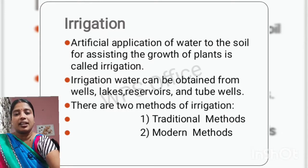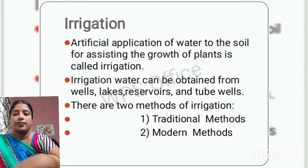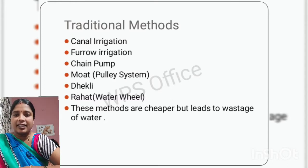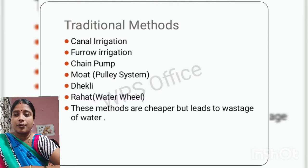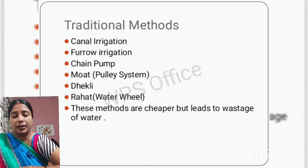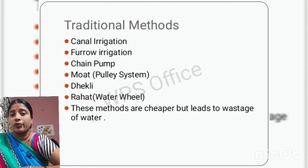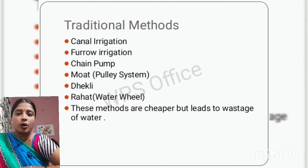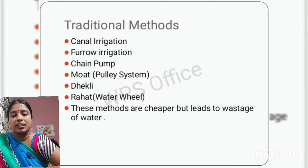The different traditional methods are canal irrigation, furrow irrigation, chain pump irrigation, moat (also known as pulley system of irrigation), dhekli system of irrigation, and rahat (also known as water wheel system). All these traditional methods lead to wastage of water — a large amount of water gets wasted. That is why modern methods were evolved from these traditional methods.